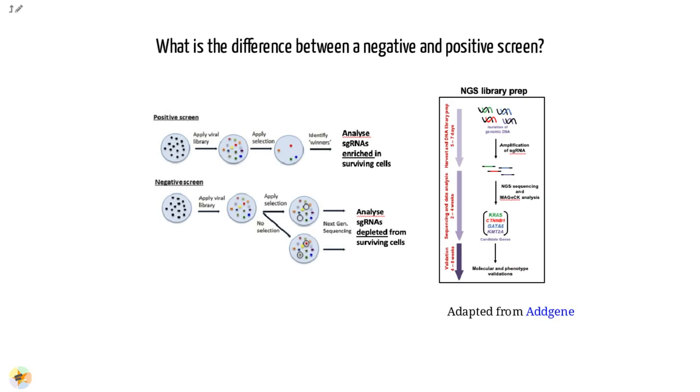CRISPR positive or negative screens can be performed. With a positive screen, few cells survive the treatment, and we are interested in identifying genes whose guide RNAs increase, are enriched, indicating knockout of those genes leads to resistance.